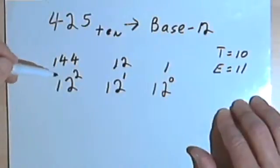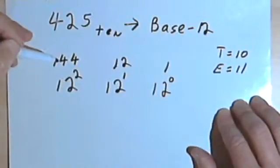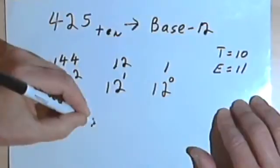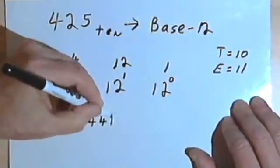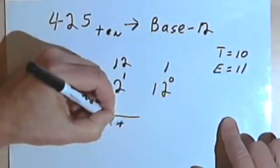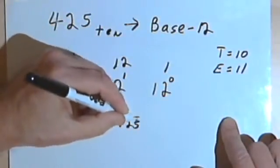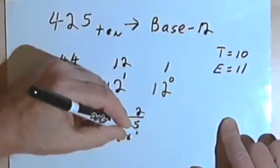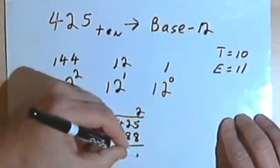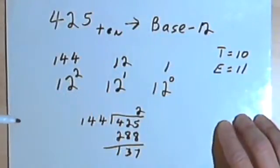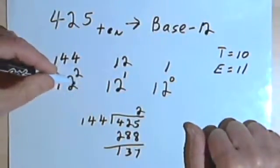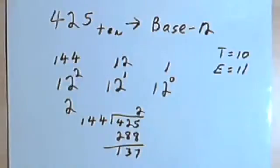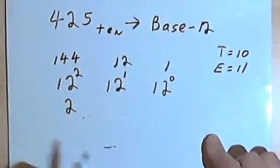Now I want to find out how many times I can divide 144 into 425 — or how many times I can take 144 away from 425. I've got 144 into 425, and that's going to go 2 times. 2 times 144 is 288, and my remainder is 137. So underneath the 12 squared column, I'm going to write a 2, because that's how many times 144 went into 425.